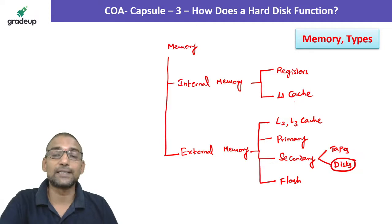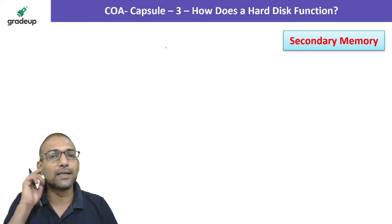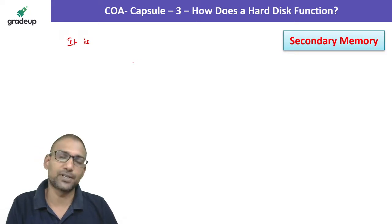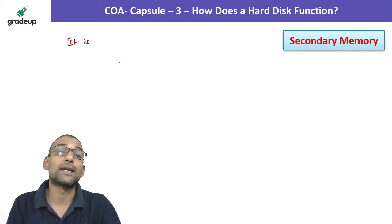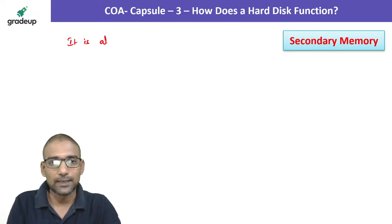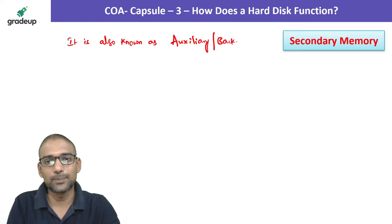Secondary memory is classified into tapes and disks. Today's concept — the hard disk — is a kind of secondary memory. It is called secondary memory because it is always additional and optional for the CPU to function; main memory is mandatory. So it is always secondary for the CPU, hence that name. It is also known as auxiliary storage or backup storage.